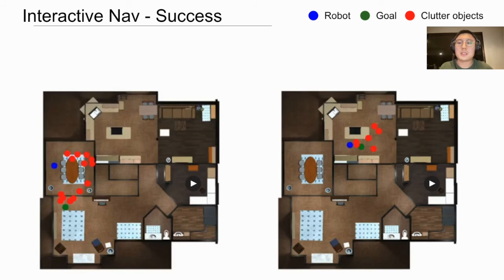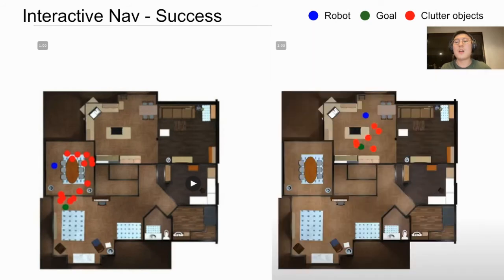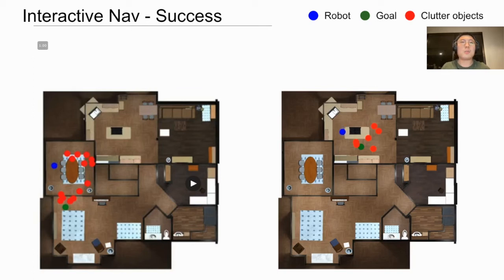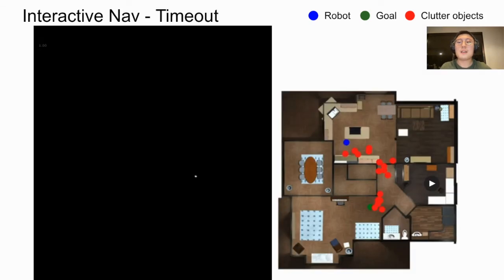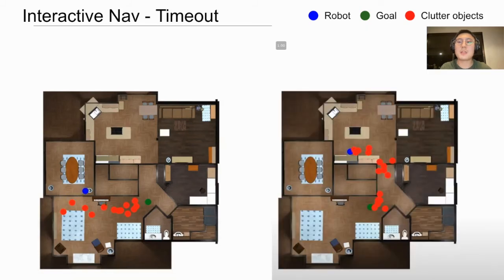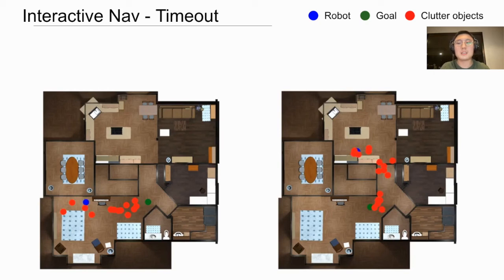We will now take a look at qualitative results for each track. In the following visualization, the robot is represented as the blue circle, the goal as the green circle, and cluttered objects as the red circle. First, we show two successful episodes in the interactive navigation track — in both episodes, the agent pushes away one or more cluttered objects blocking the way and achieves success. Then we show two failure cases due to timeout — in both episodes, the agent is overwhelmed by the number of cluttered objects blocking the way, ending up either wandering into the wrong room or getting stuck trying to push multiple objects simultaneously, and failing to retract and correct past mistakes.